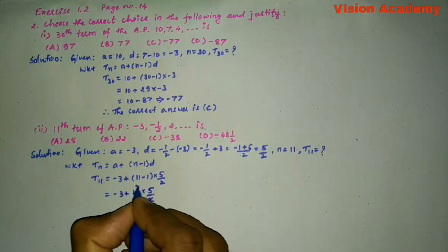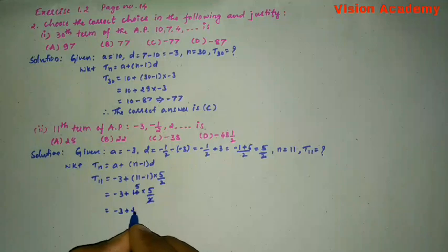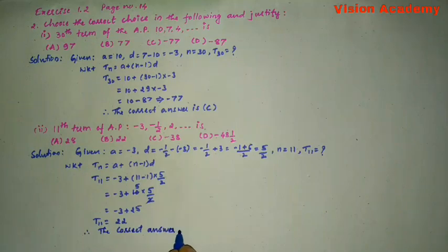2 into 10 is 5, so minus 3 plus 5 times 5 is 25, which gives me 25 minus 3 is 22. T11 is 22. Therefore, the correct answer is B.